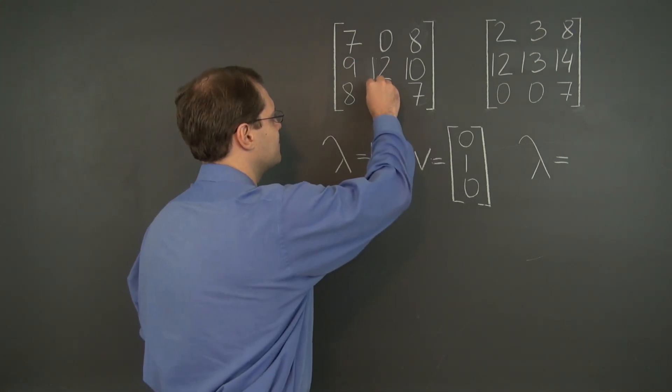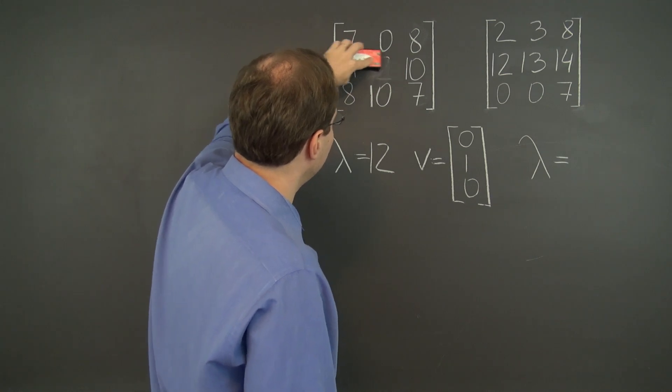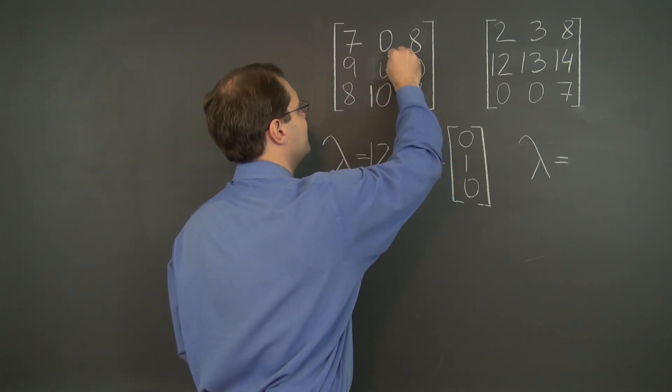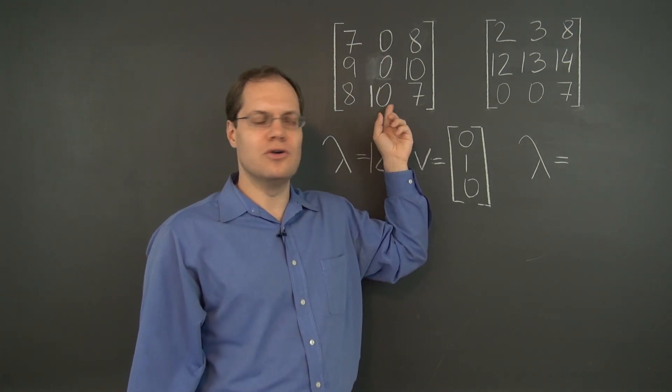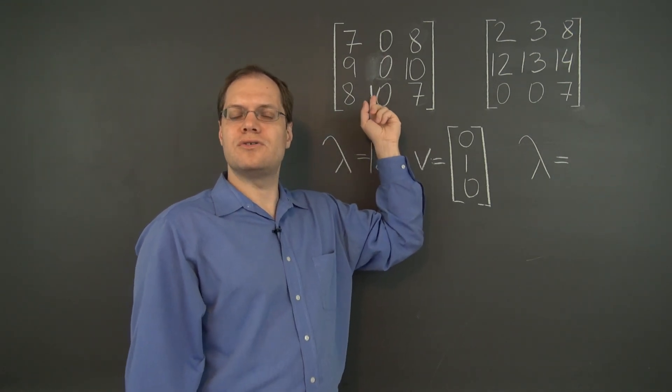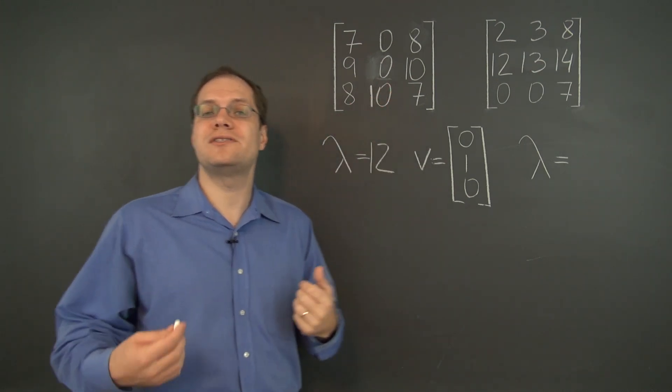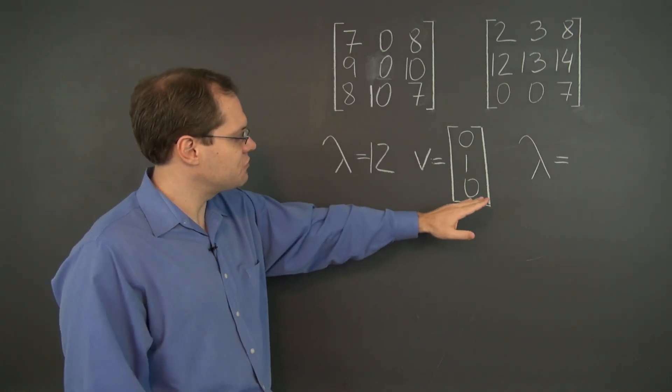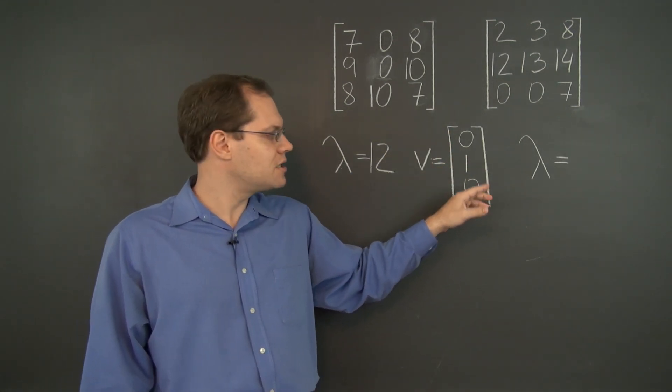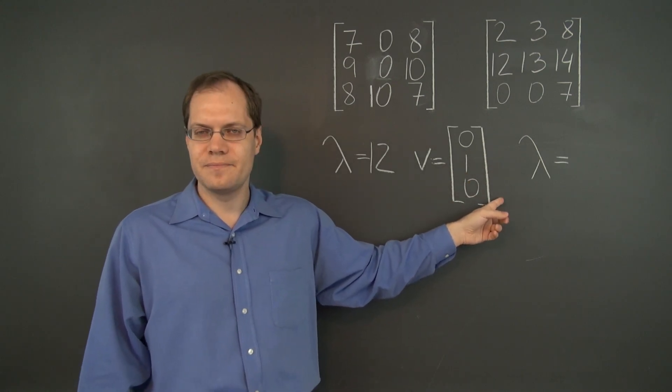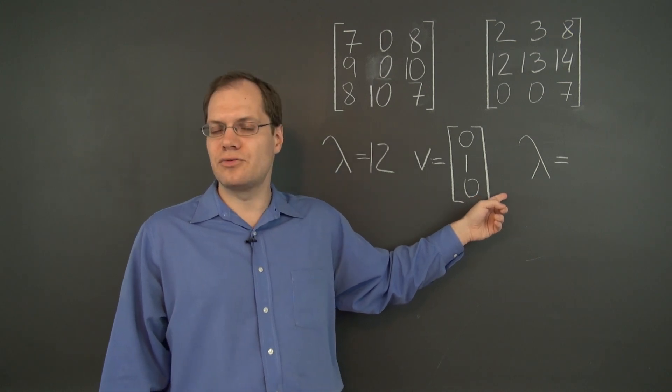Were it not on the diagonal, let's say it's in the third row—let's say this is a 0 and we have a non-zero entry in the third row of the second column. So it's still the only non-zero entry in its column. But what we said before simply doesn't apply because if we were to multiply this matrix by [0, 1, 0], the result will be [0, 0, 10]. And that's not ten times the input vector because the entry is in the wrong place.